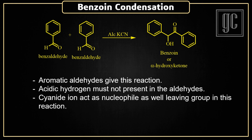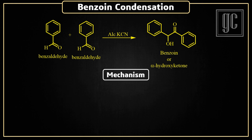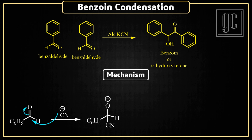Cyanohydrin is formed as an intermediate in this reaction. Now we are going to discuss the mechanism. In the presence of basic conditions, cyanide ion attacks on the carbonyl group of the aldehyde, and as a result pi electrons move to oxygen. A proton migration then takes place from the active carbon atom to the negatively charged oxygen, and a cyanohydrin carbanion is formed as an intermediate.